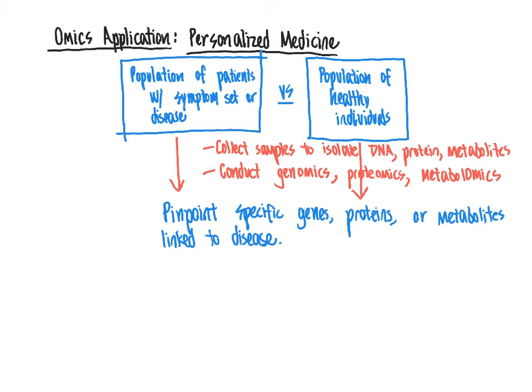In the case of genetic differences, if we took patients with cystic fibrosis — a genetically linked disorder — compared to healthy persons, we would see a clear linkage to a specific mutated gene. Due to that gene mutation, there would be a corresponding change in the corresponding protein, so you'd see a difference at both the genome level and the proteome level. This enables us to pinpoint specific genes, proteins, or metabolites involved in disease, which guides treatment.